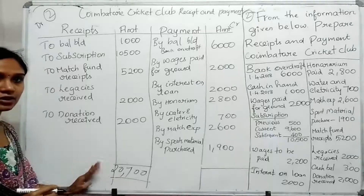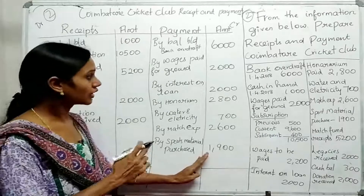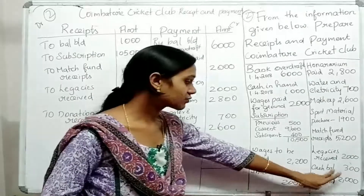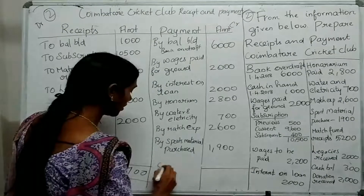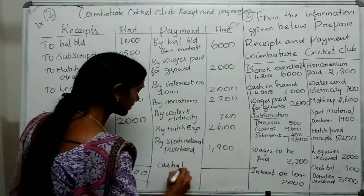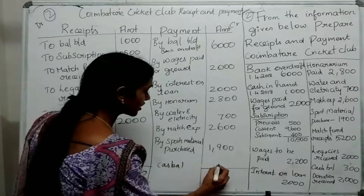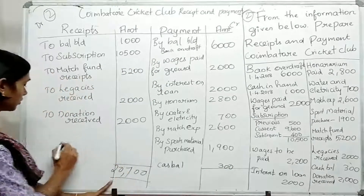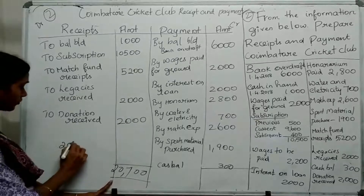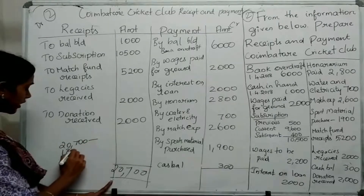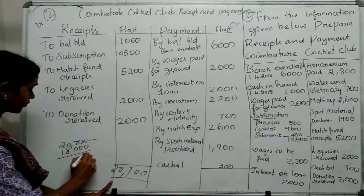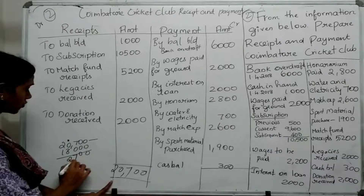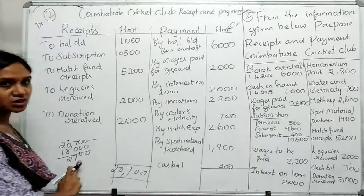Total Receipt side (Credit side) comes to $20,700. Cash balance is $300. So the balancing amount is $20,700 minus $18,000, which equals $2,700. This is the balancing amount.